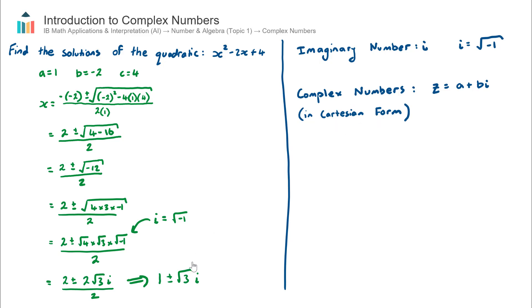So back to my example here to start the video I had 1 + √3i. So the form of a complex number in Cartesian form is a + bi. Now we usually - textbooks and exam papers - will define complex numbers either as z or w, so I'm just going to use z here. So the complex number in Cartesian form is z = a + bi.